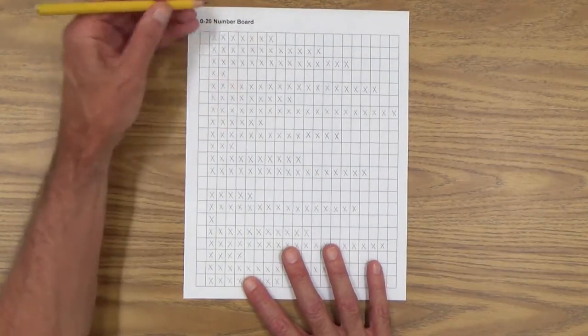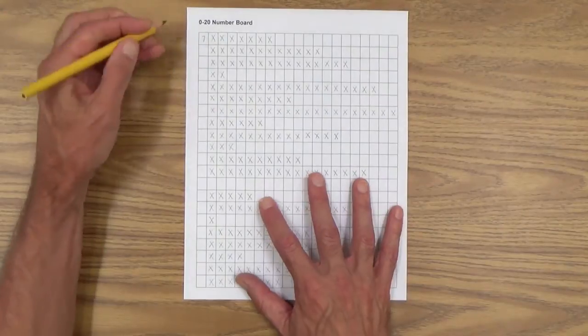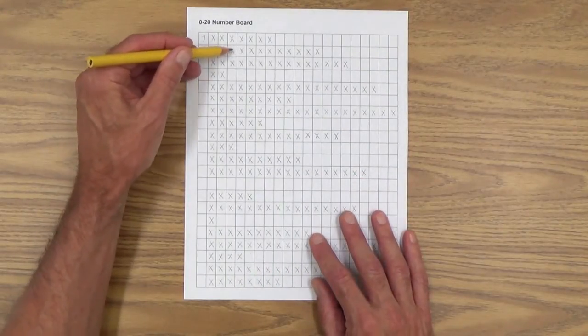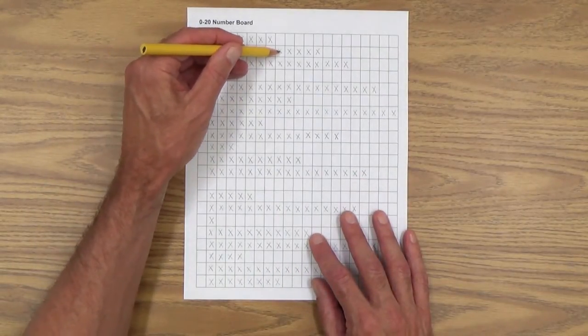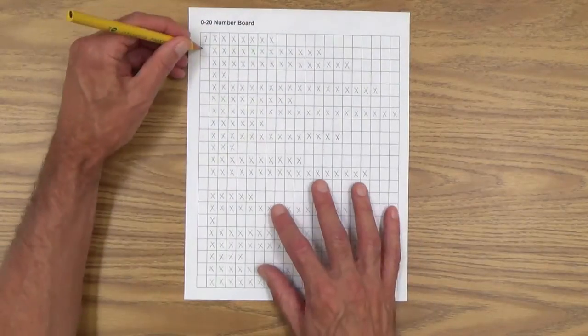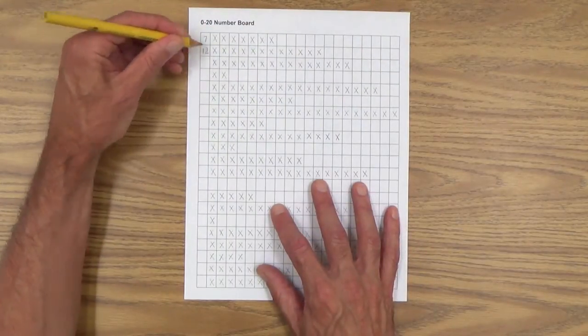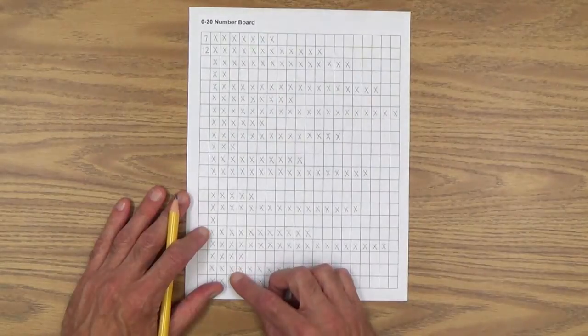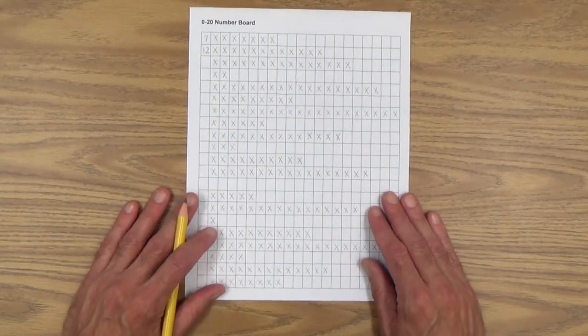1, 2, 3, 4, 5, 6, 7. 1, 2, 3, 4, 5, 6, 7, 8, 9, 10, 11, 12. And of course, on and on down the sheet until they've completed the exercise.